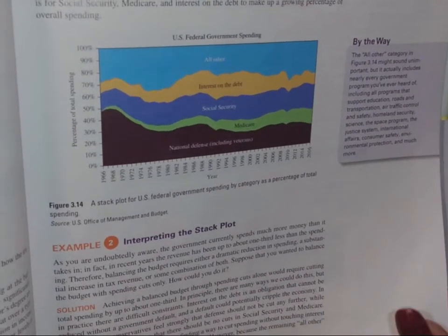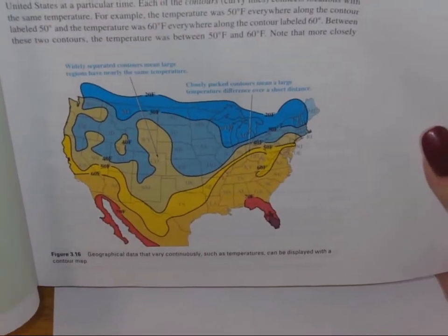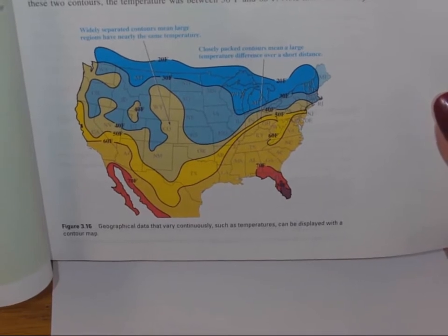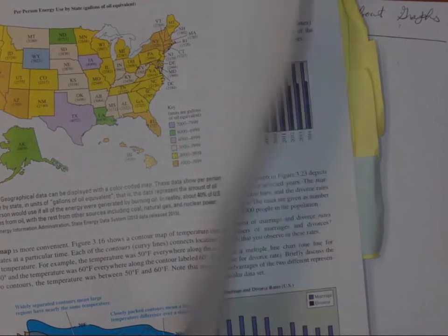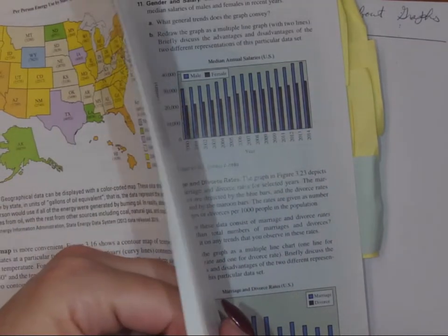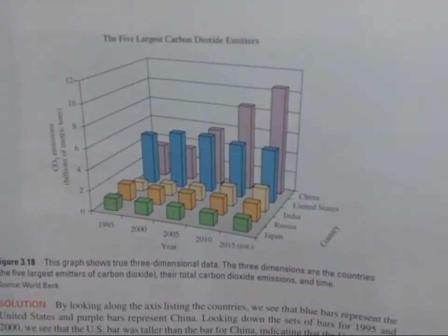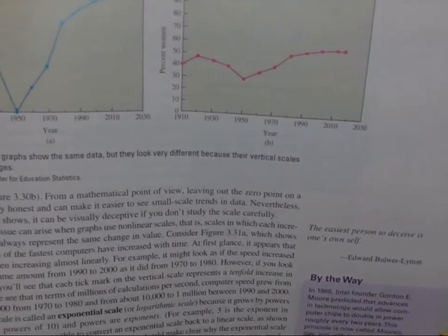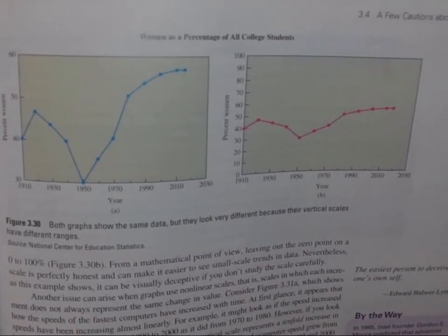There are all kinds of other graph types we haven't covered — geographic data like temperatures can be shown on a contour map, and you'll also encounter three-dimensional bar graphs in essays and media. Be aware of these varied formats. The key cautionary message is always know exactly what you're looking at.